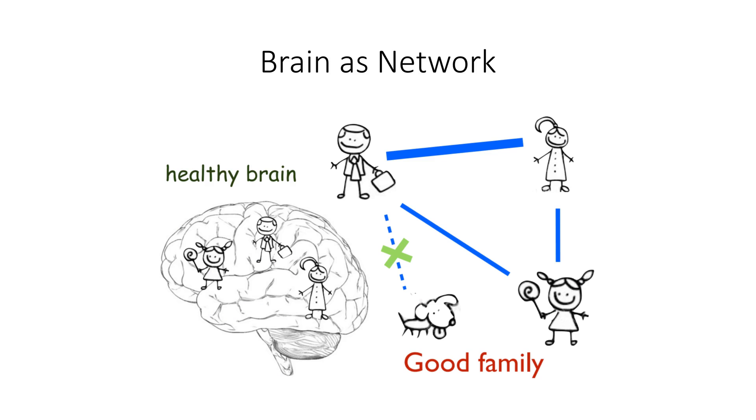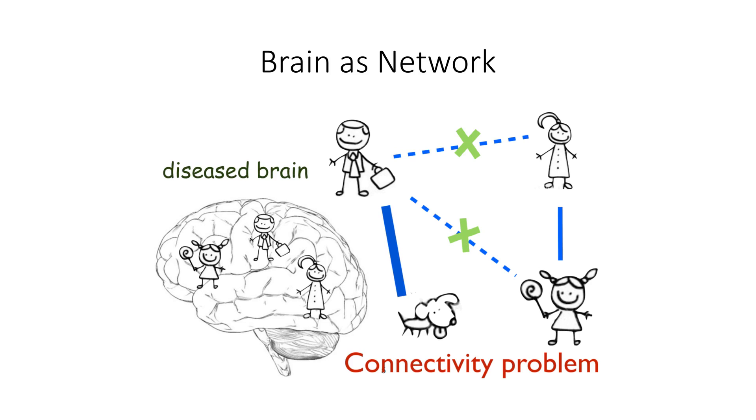The linkage information in brain networks is important because, for example, three brain regions should work collaboratively in a healthy brain. The absence of any connection between them may indicate a connectivity problem in the brain.